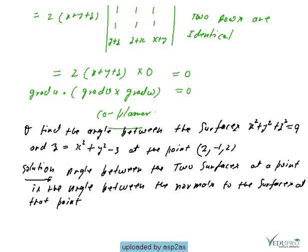Next question: find the angle between the surfaces x²+y²+z² = 9 and z = x²+y²−3 at the point (2,−1,2). We will use the property that the angle between two surfaces at a point equals the angle between the normals to those surfaces at that point.